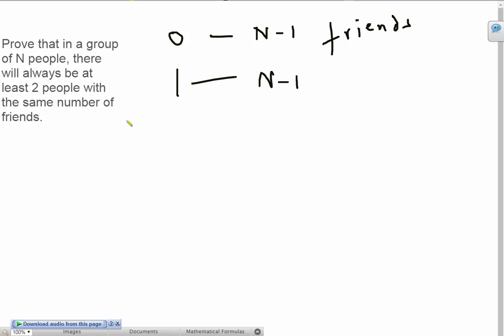So, I have n minus one pigeonholes here. Basically, what that means is I can map the first guy to have one friend, I can map the second guy to have two friends, the third guy to have three friends, and so on, until finally, I map the n minus one guy to n minus one friends.